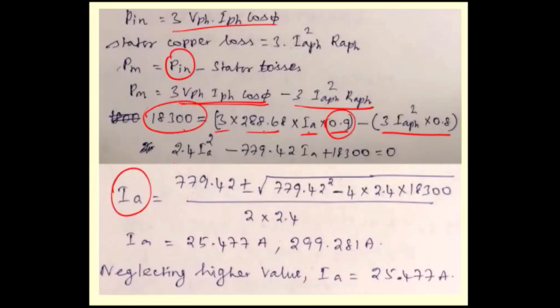From that you have one quadratic equation. You can solve using minus B plus or minus square root of B² minus 4AC divided by 2A formula. You will have two values: one value is 25.477, another is 299. From these two, you have to choose one. The 299.9 is not realistic, that is higher value, so that is neglected. IA value should be 25.477 amperes.